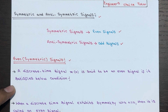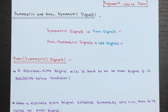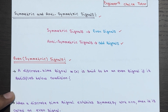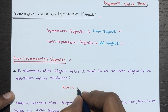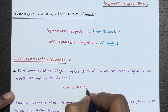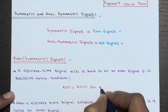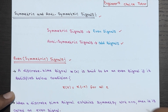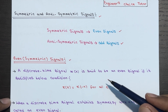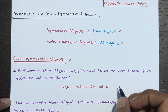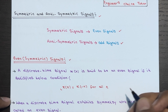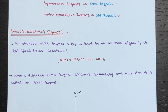A signal in discrete time, denoted as X(n), is considered even if it satisfies the following condition: X(n) should be equal to X(-n) for all n. So if any discrete signal X(n) satisfies this condition, then we can say that signal X(n) is an even signal.